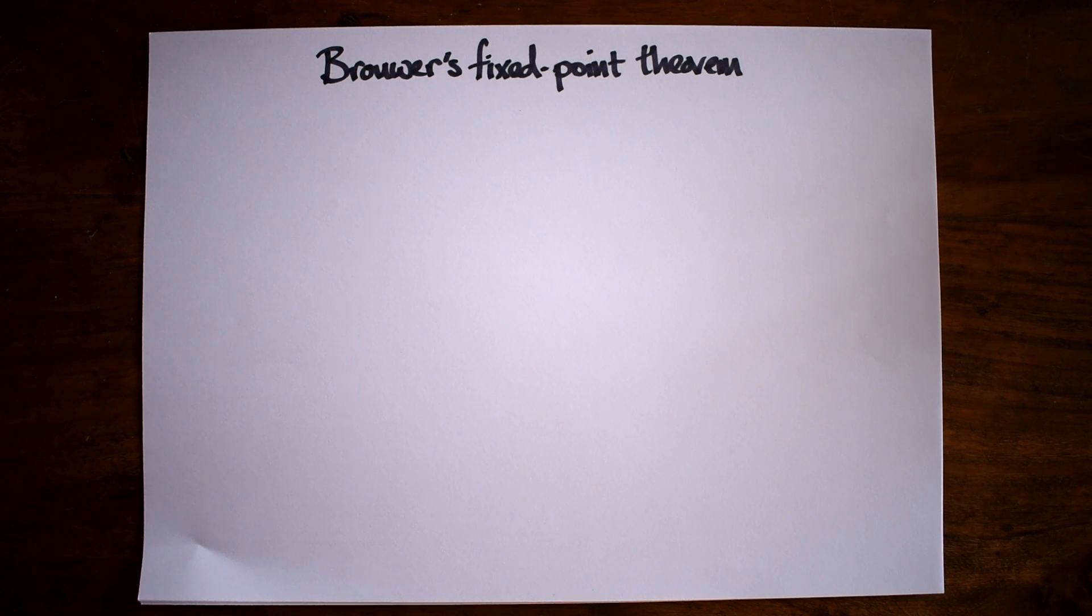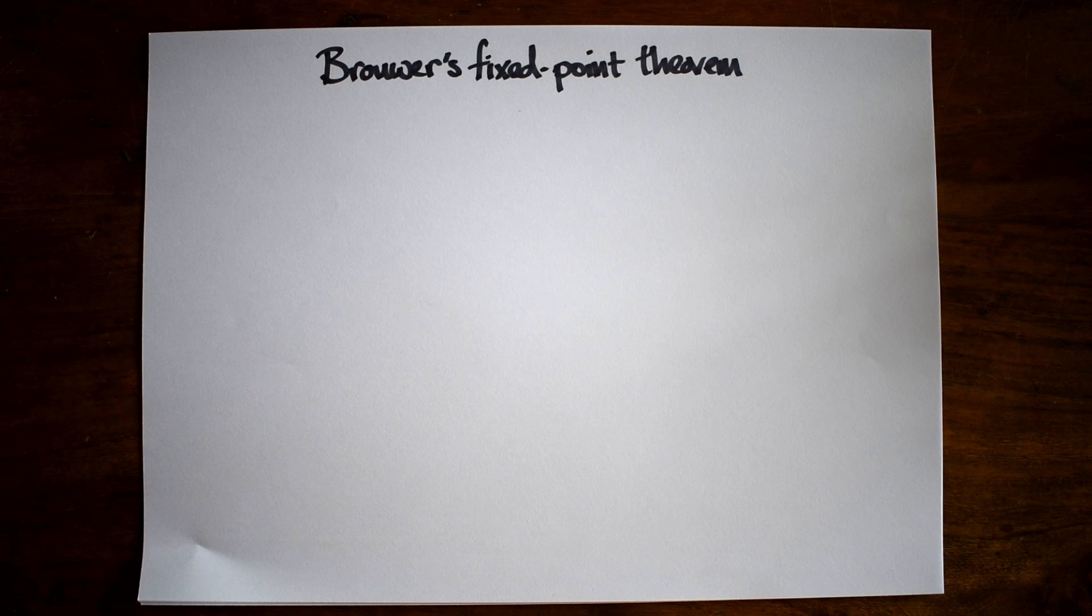If there are no holes in the object, that means it's convex, and the transformation is continuous, that means no ripping or tearing, this is true for any shape, in any dimension.